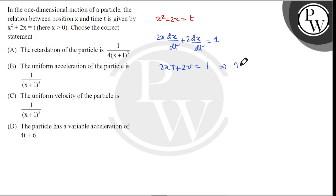We have a variable velocity. We have v equals 1 upon 2x plus 2, which is 1 upon 2 times x plus 1. If we differentiate this,